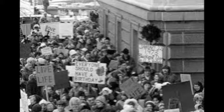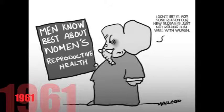Estelle Griswold, who was the Executive Director of Planned Parenthood League of Connecticut, and Director Celie Buxton, who was a professor at Yale School of Medicine, both worked to create a clinic where they provided birth control counseling to married women. It all began in 1961 when Griswold and Buxton challenged the law by opening a birth control clinic in New Haven, Connecticut.